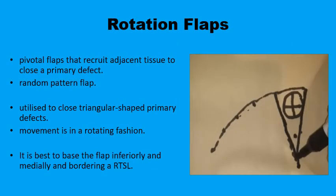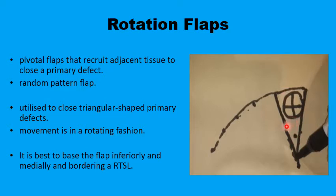As the name implies, rotation flaps are pivotal flaps. They are usually random pattern flaps, utilized to fill up a triangular defect, or a defect that can be made into a triangular shape. If you start with a circular, square, or elliptical lesion, you can always draw a triangle around that lesion.